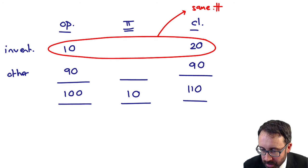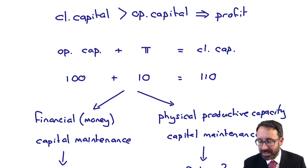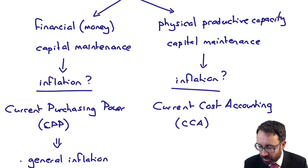But here we're looking at that change in that specific asset, the inventory, and asking ourselves the question: can we purchase the same number of units as what we could previously at the start of the year? If we can't, we need to make an inflationary adjustment to reflect the number of units that we can actually physically produce or operate with within the business.